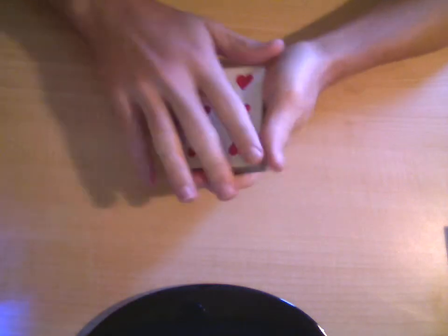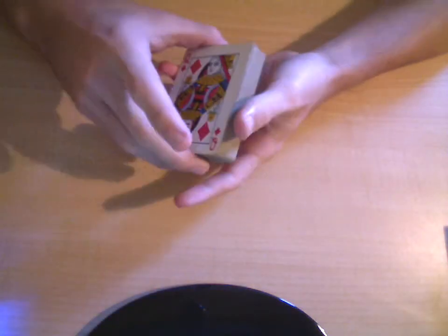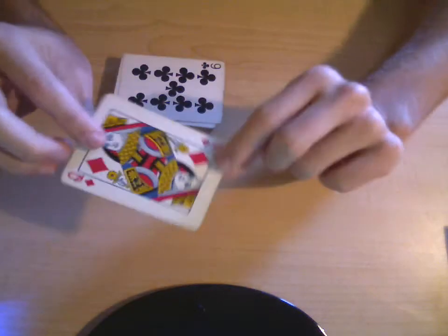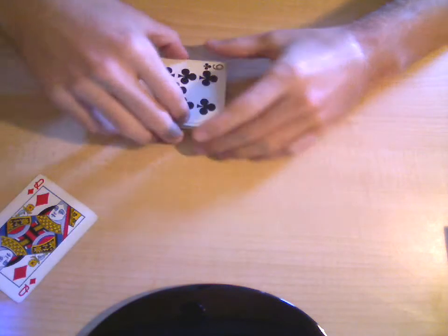But wait. This is just an illusion. Because if I rub the Six of Hearts, it changes back into the Queen of Diamonds. I want you to look at this card though. As you can see, it's completely normal. There's no gimmicks or anything. It's completely normal.